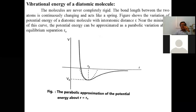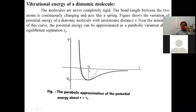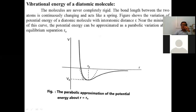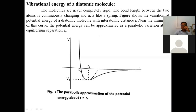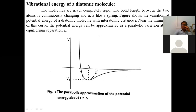At equilibrium, the fixed distance is r0, but continuously this distance keeps changing — increasing and decreasing. This variation of potential energy is parabolic, therefore we have to consider a parabolic equation for the potential energy.